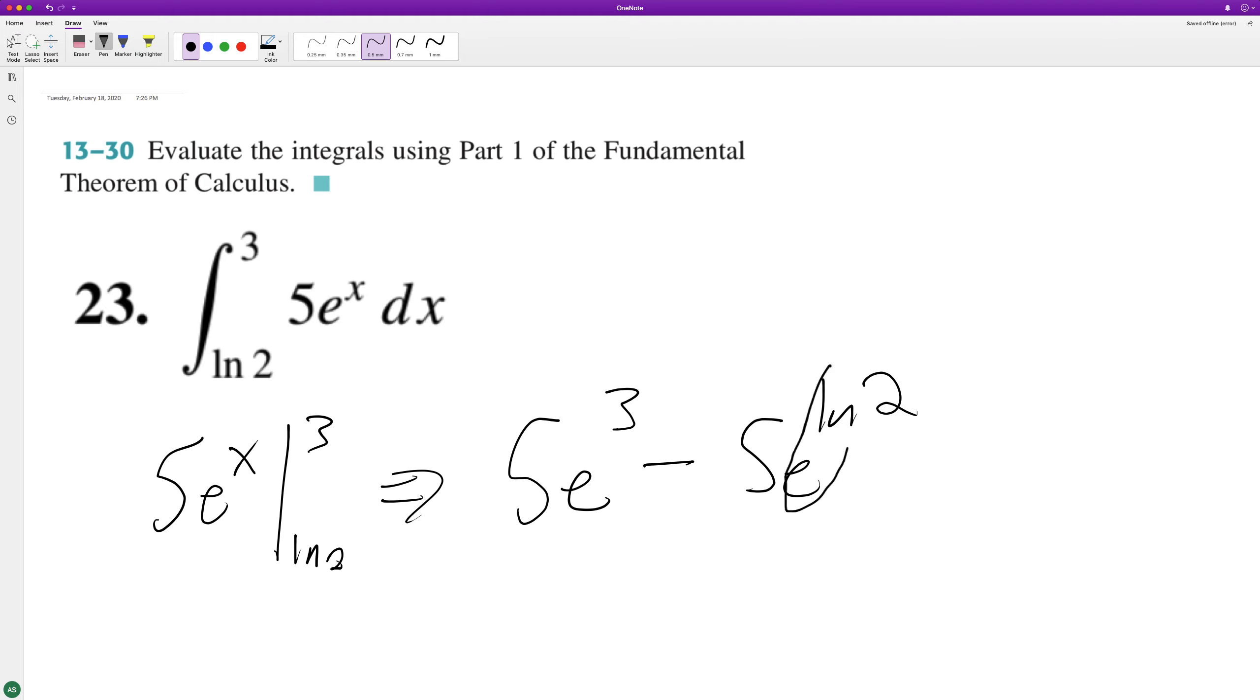And the great thing is whenever you get e and natural log here these cancel each other out, you can bring the 2 down so we get 5 times 2.